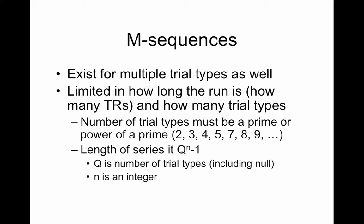M-sequences again, these are special sequences. You can't just say I would like an m-sequence for my 20 trials of four types. They can exist for multiple trial types but there are limitations. One limitation is how long the run is, how many TRs you have and how many trial types you have. The number of trial types must be a prime or a power of a prime. These are just the rules of m-sequences. For example you could have two, three, or four because four is two squared, five prime, seven prime, eight is two cubed so it's allowed, nine is three squared, etc. That's the number of trial types.